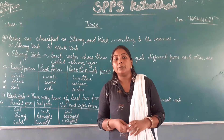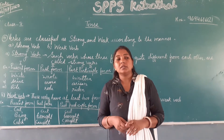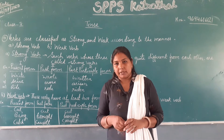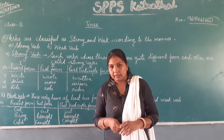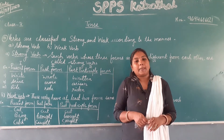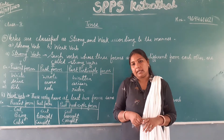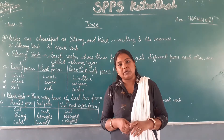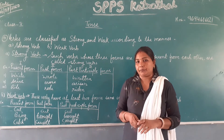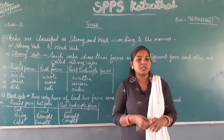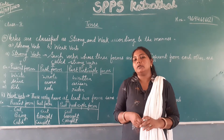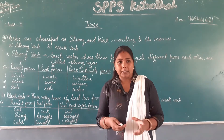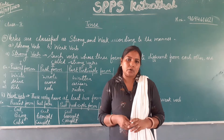Transitive verbs are those verbs which are accompanied with some direct or indirect object — like 'I play cricket': I is subject, play is verb, cricket is object. Intransitive verbs are those verbs which are not accompanied with some direct or indirect object.